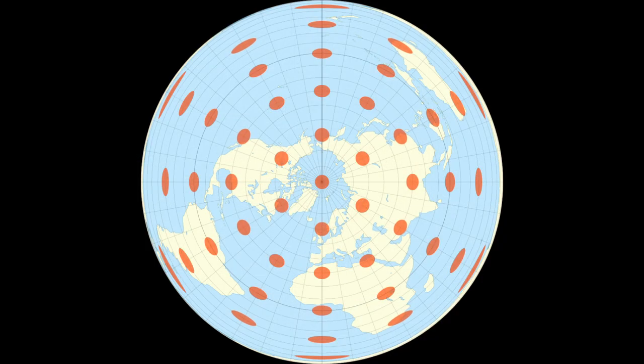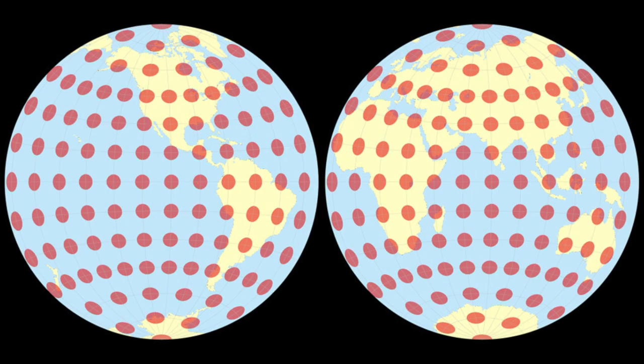However, this does not preserve angles on the map. This Tissot's indicatrix shows essentially why the hemispherical version of the map is superior to the spherical. Notice how the circles become more and more oval the further south you go. Once you get past the equator, there is a distinct drop in the benefit of this projection.